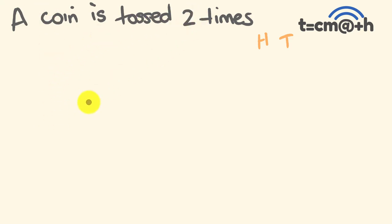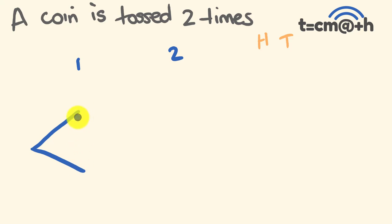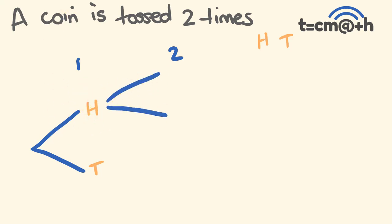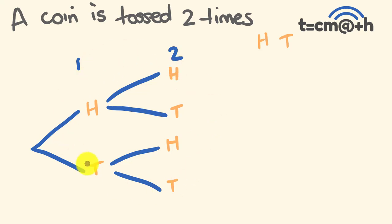There are two different events occurring, so we deal with the first one and then the second one. This is why they're called tree diagrams — for that first event, we branch off. You could get a head or a tail. For the second toss, if you got a head first, you end up with a head or a tail; or if you got tails first, you end up with a head or a tail. So this is a tree diagram — nice and easy.